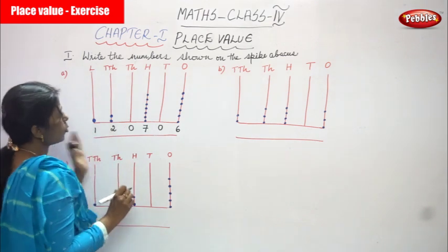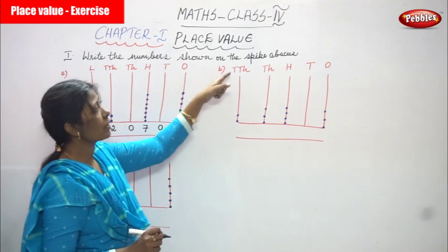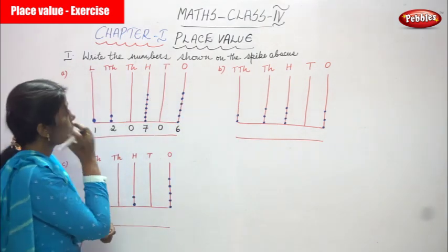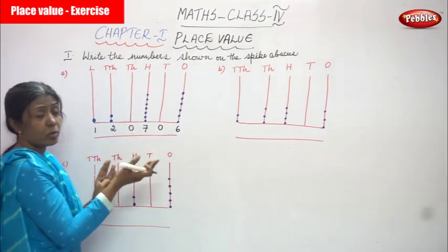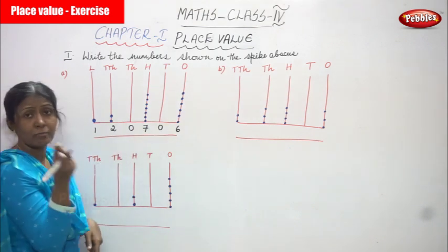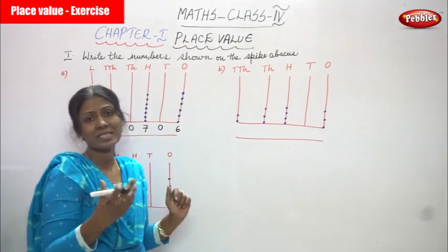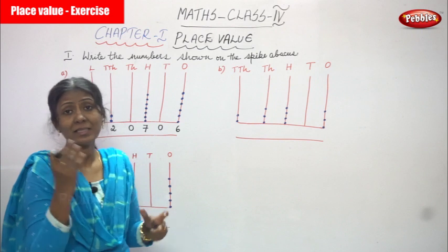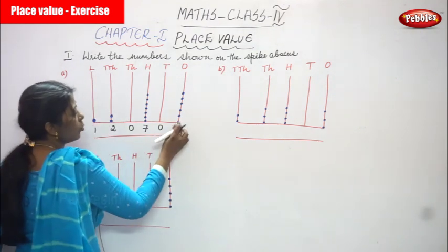So this is what you have to write. I will repeat once again. Write the numbers shown on the spike abacus — this is the abacus method. You have to count the balls, or rather count the dots. Consider these dots as balls from the abacus kit. How many dots are here? 1, 2...